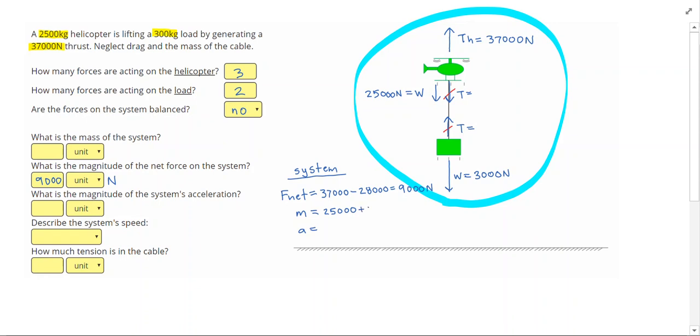I subtracted things in opposite directions, but mass doesn't have directions, it's a scalar, so we're always going to add. So that was 2500, plus 300, gives me 2800 kilograms.